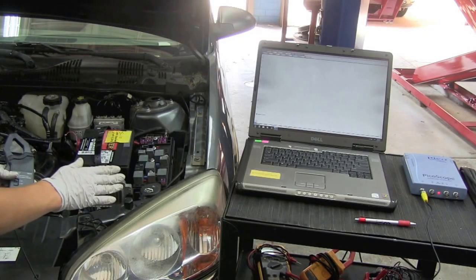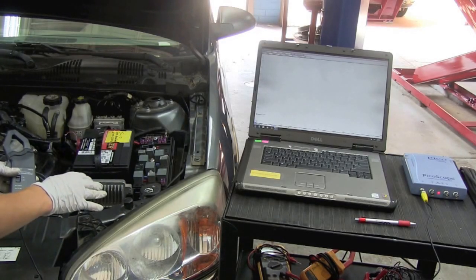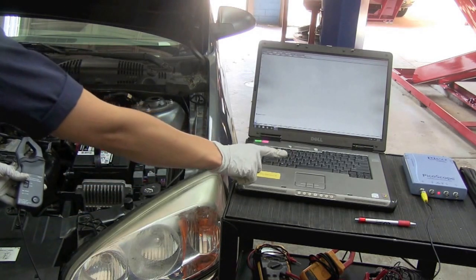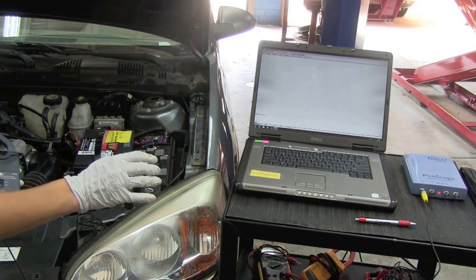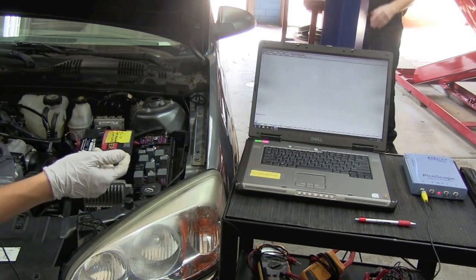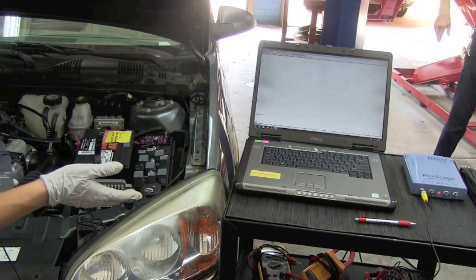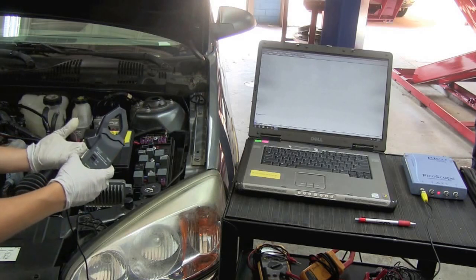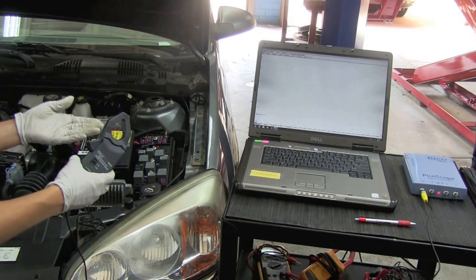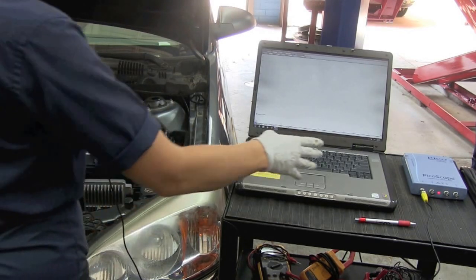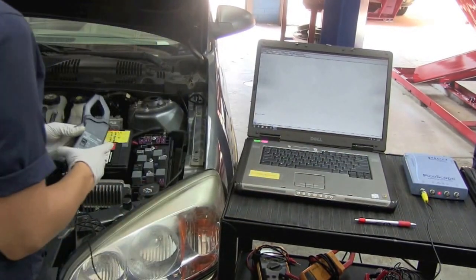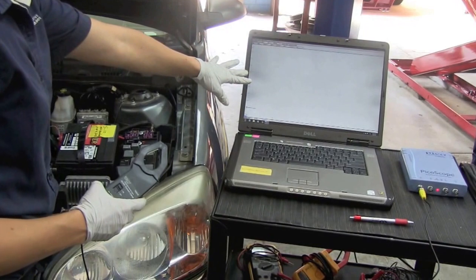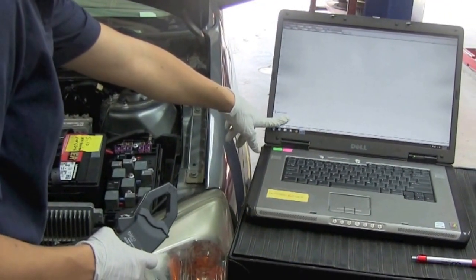Now we're going to repeat the same test, but this time we're going to use the Picoscope. Picoscope is one of the more common scopes that you'll find out there, and a lot of manufacturers are starting to use them as well. We're hooking it up almost identically to the meter, except instead of jacks, we have a BNC connector here. I've already set my scope parameters.